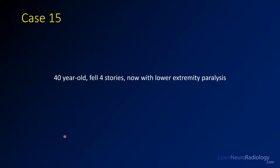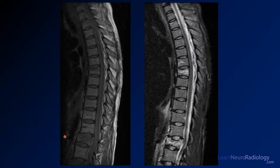For case 15, we have a 40-year-old who fell four stories and now has lower extremity paralysis. We have a couple of images from a thoracic spine.